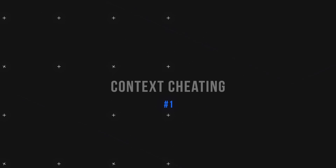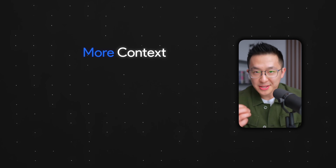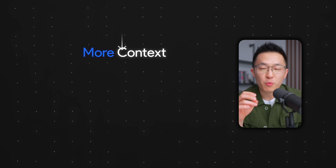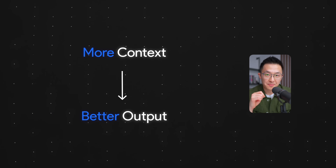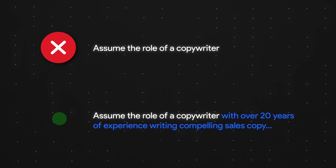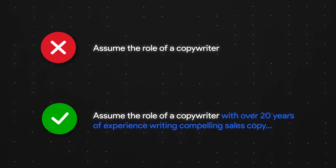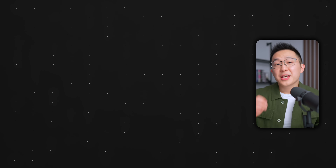Kicking off with use case number one: context cheating. By now, we all know the more context we share with AI tools, the better the output. For example, 'assume the role of a copywriter' will perform worse than 'assume the role of a copywriter with over 20 years of experience writing compelling sales copy.' The problem is we're kind of lazy, and thinking of relevant context to include every single time is a lot of work.